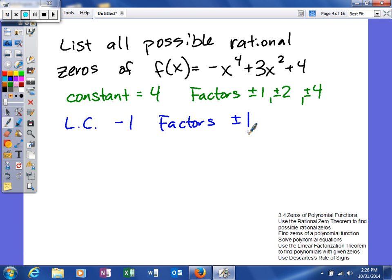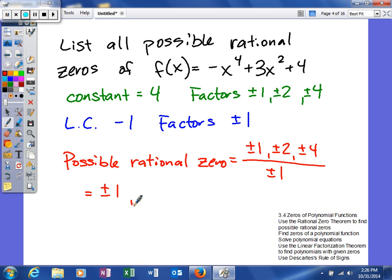What we're going to do is find our possible rational zeros. We're going to take the factors of the constant, plus or minus 1, plus or minus 2, plus or minus 4, over the factors of our leading coefficient. We're going to take every number in our denominator and divide it into every number in our numerator. So, our possible rational zeros, in this case, will be plus or minus 1, plus or minus 2, and plus or minus 4.